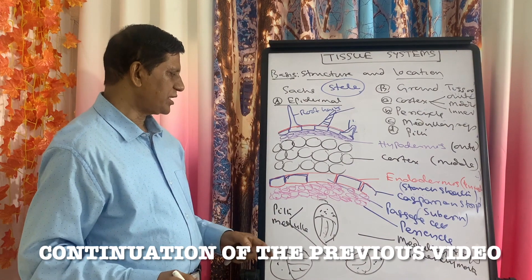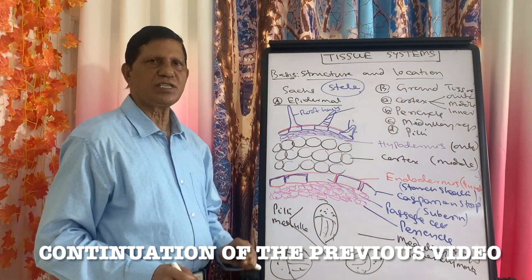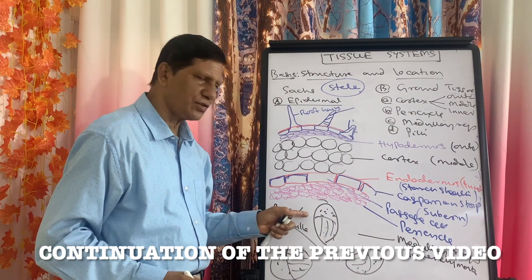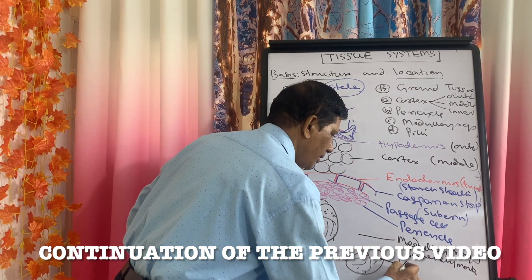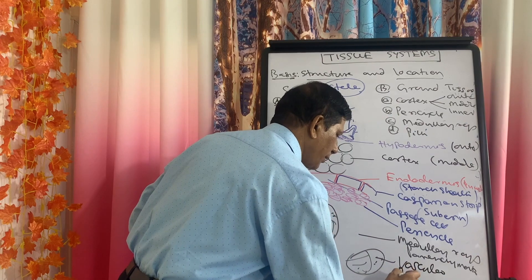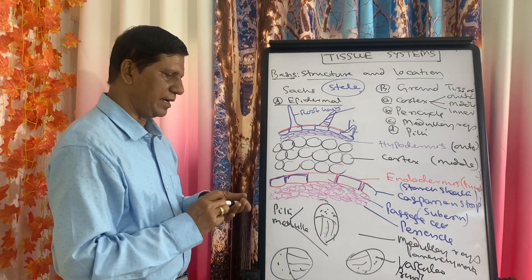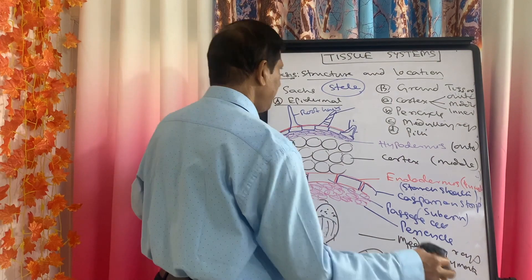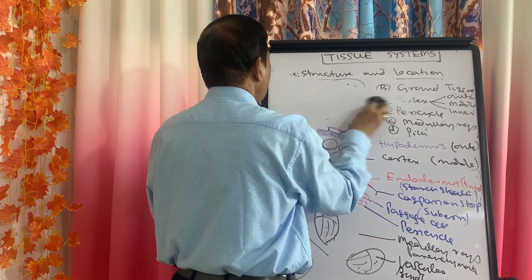The third tissue system is the vascular tissue system, which includes vascular bundles. We have to discuss the structure of the vascular bundles in detail.